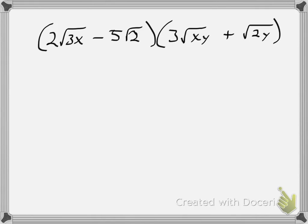We multiply inside to inside, outside to outside, meaning that when I multiply two terms — for example, when I first start with 2 square root of 3x times 3 square root of xy — I multiply what's outside the radical, which is going to be my 2 and the 3, so I get 6. And then what's inside the radicals: 3x times xy, so I get 3x squared y. In other words, I wouldn't multiply 2 times the xy, or 3 times the 3x.